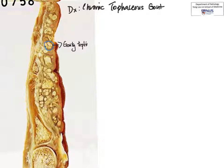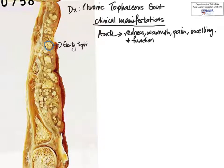Now let's look at some of the clinical manifestations of gout. We can think about it in terms of the acute phase as well as the chronic phase. So acutely, whether these crystals are in the joint spaces or in the soft tissues, they would incite a very marked acute inflammatory reaction. So the patient would experience the signs of acute inflammation: redness, warmth, pain, swelling, and of course, loss of function.